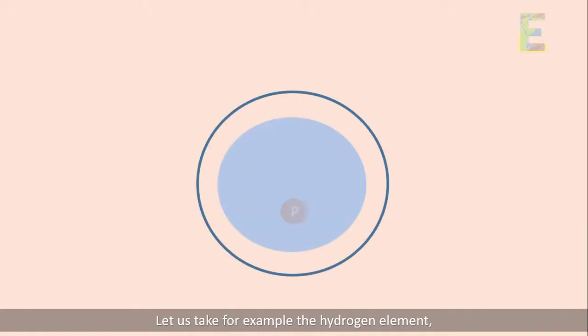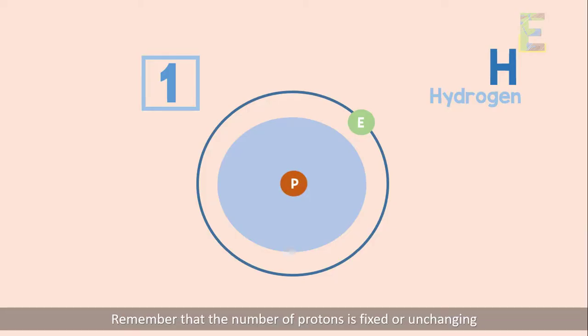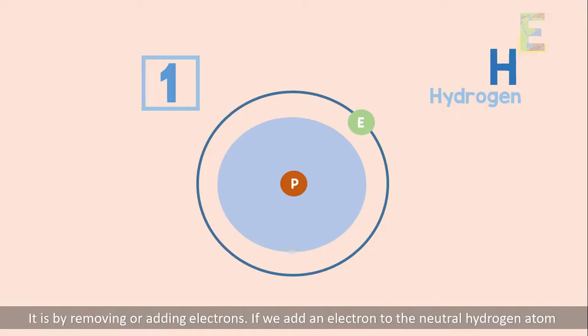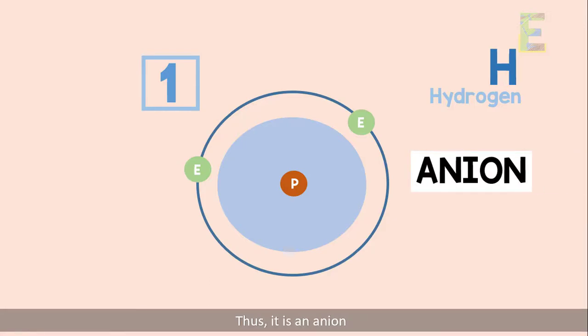Let us take for example the hydrogen element. It is generally a neutral atom with one electron and one proton. Remember that the number of protons is fixed or unchanging, so how are we going to make this an anion or cation? It is by removing or adding electrons. If we add an electron to the neutral hydrogen atom, it will then have two electrons and one proton. Then, net charge is negative. Thus, it is an anion.